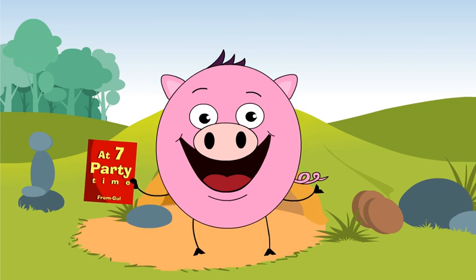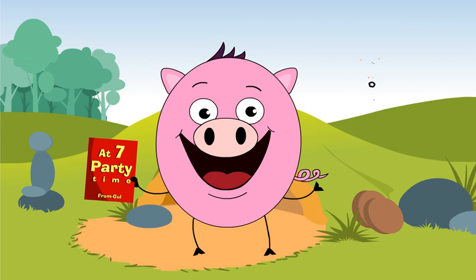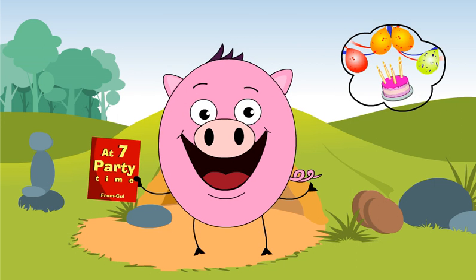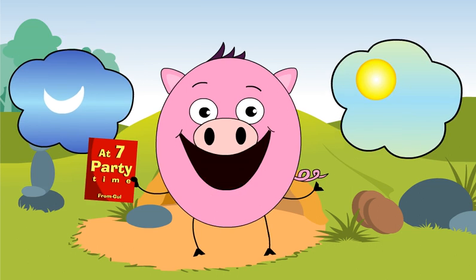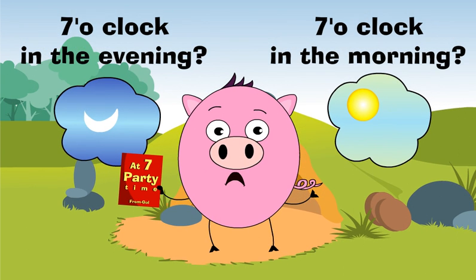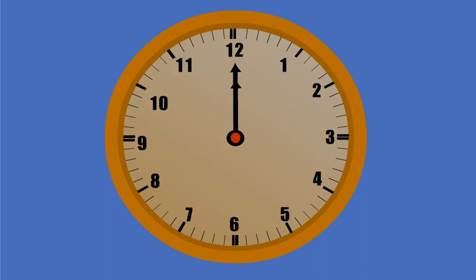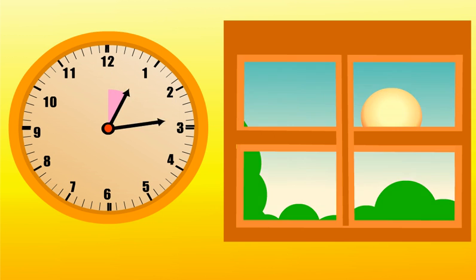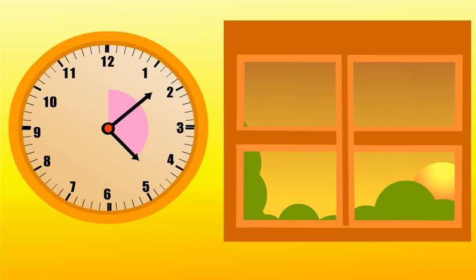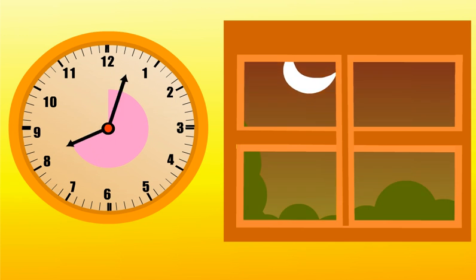Popo gets an invitation at 7 from Gold for a party. There are 24 hours in a day, but there are only 12 numbers on a clock. The hour hand goes round the clock twice in one day.